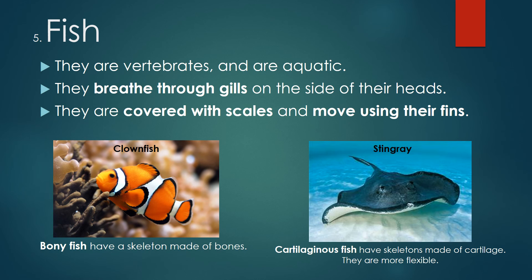Fish. Fish are vertebrates and are aquatic. They breathe through gills on the sides of their heads, are covered with scales, and move using their fins. Clownfish are an example of bony fish, which have skeletons made of bones. Stingrays are cartilaginous fish — their skeletons are made of cartilage, making them more flexible.